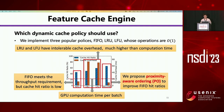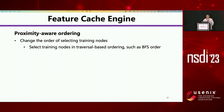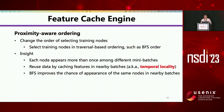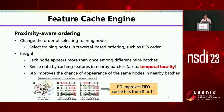After the improvement, the FIFO cache achieves the highest cache hit ratios. The key idea of proximity-aware routing is to change the order of selecting training nodes. We select training nodes based on traversal-based ordering, specifically using BFS order. The insight is that each node appears more than once among different mini-batches, so we can reuse data by caching features in nearby batches — the so-called temporal locality of GNN training. The BFS traversal preserves graph connectivity and increases temporal locality. As shown in the example, after using proximity-aware routing, FIFO cache hits improve from 8 to 14.